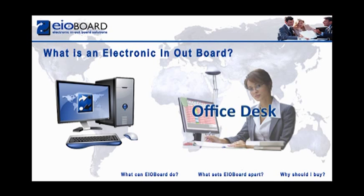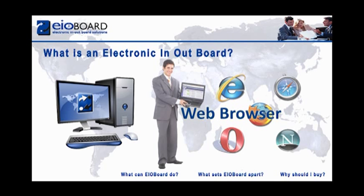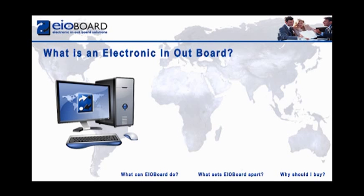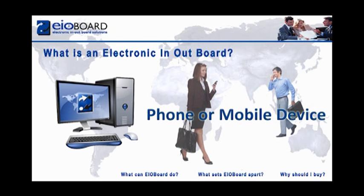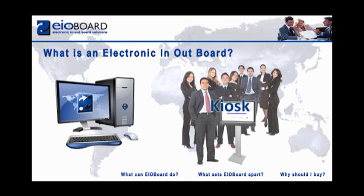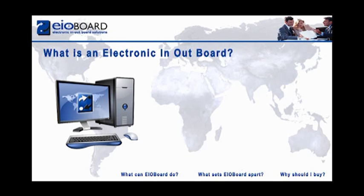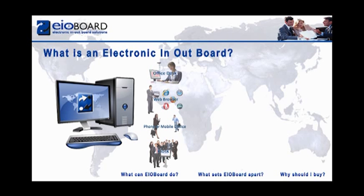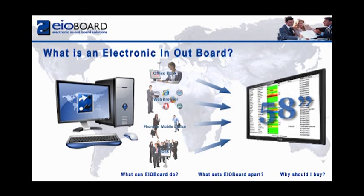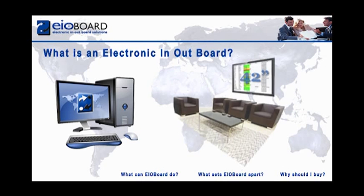It can be accessed at your desk, through an internet web browser, on your phone or mobile device that has internet access, or a strategically placed kiosk either at the front entrance or anywhere inside the building. All interfaces interactively communicate and can be displayed on a large screen display, which can be placed anywhere in the building — for example, a lobby or hallway, so people can view the status of everyone in the building.